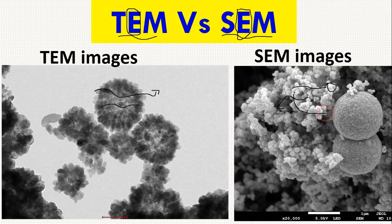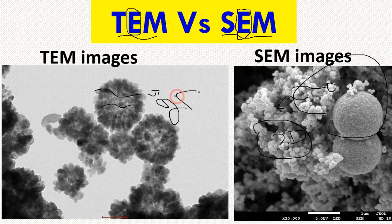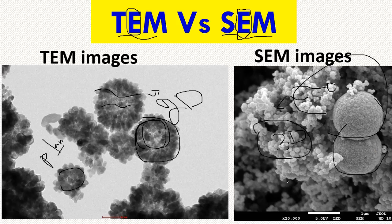One of the clear differences between these two: SEM gives us a three-dimensional image — this is one of the key differences. TEM gives us a two-dimensional image. With TEM the particle just looks like a plane, two-dimensional. But with SEM it gives a three-dimensional view — you can see the roundness and depth.